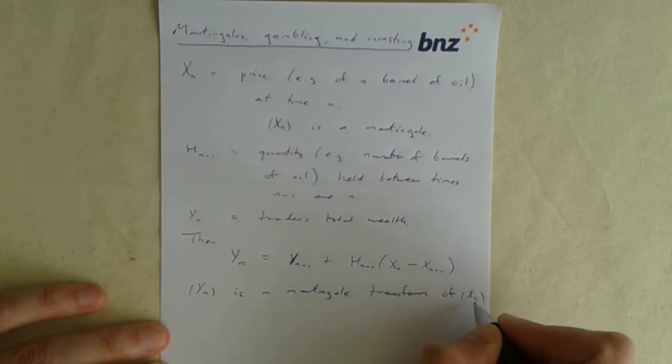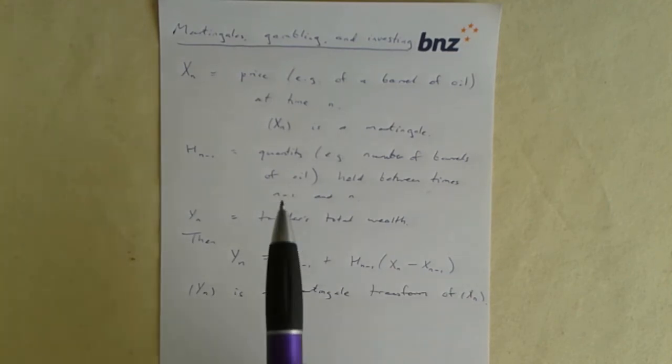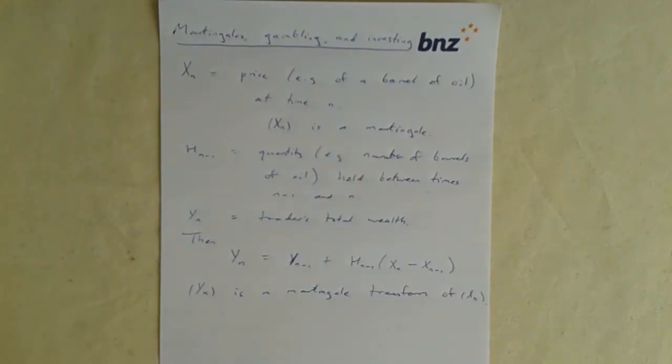And similarly, if the price went down, then this difference is negative, then he's lost money on the oil that he's holding. But this is just the martingale transform equation.